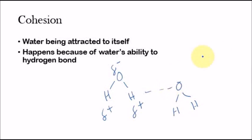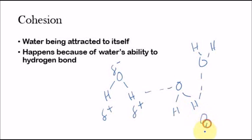And then there can be another water molecule, attracted here, and then another water molecule here — there's attraction there, and on and on and on. Basically all these water molecules attract to themselves. This is going to play a very important role in biology in later units — we'll be talking about cohesion a lot. But to give you just a real life example of where this happens...